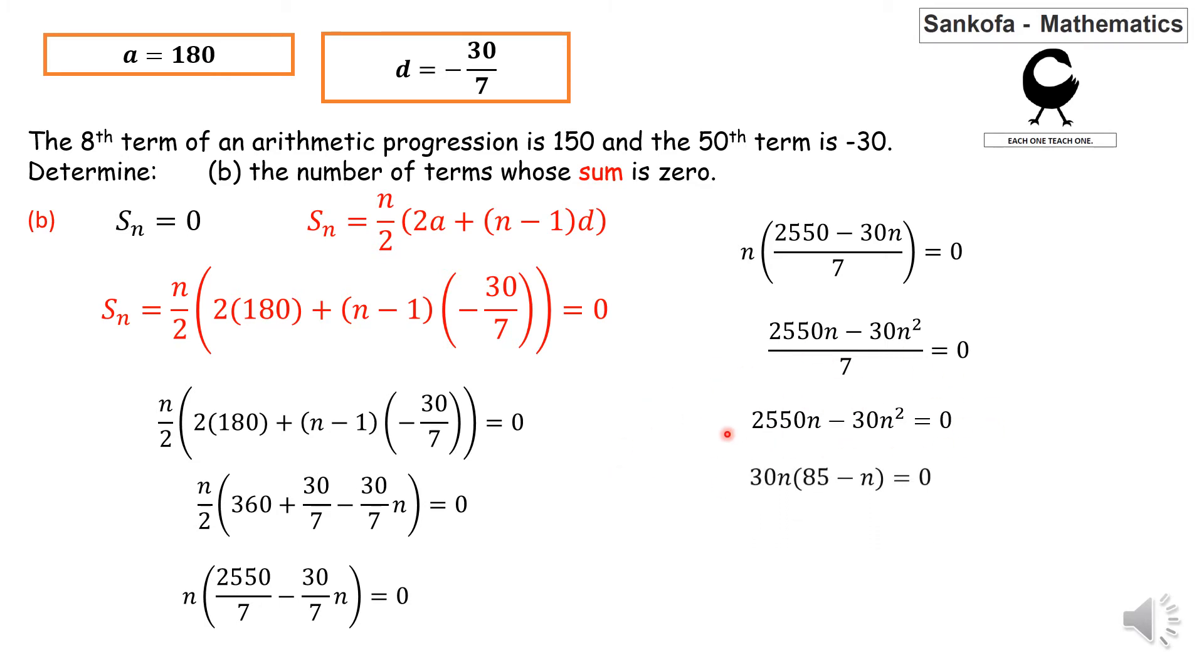30n times (85 minus n) equals 0. So 30n equals 0 gives n equals 0, or 85 minus n equals 0 gives n equals 85. Hence the two solutions are n equals 0 or n equals 85.